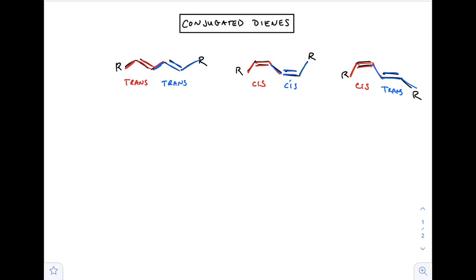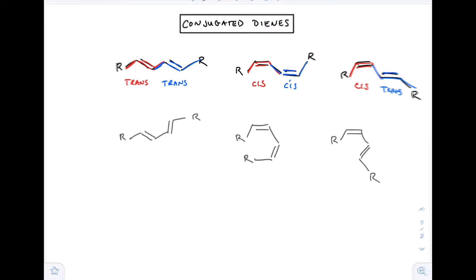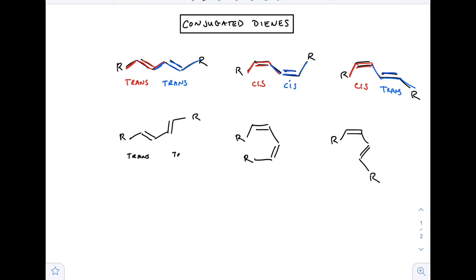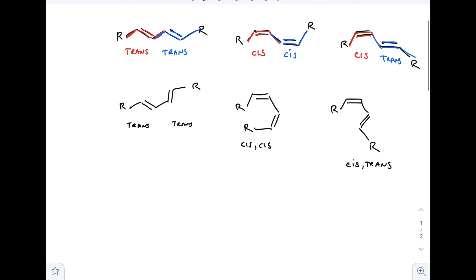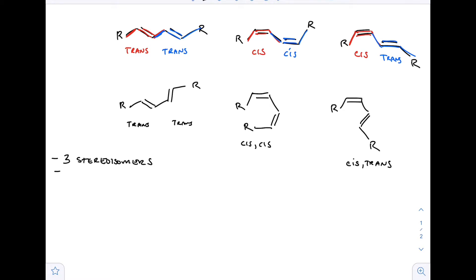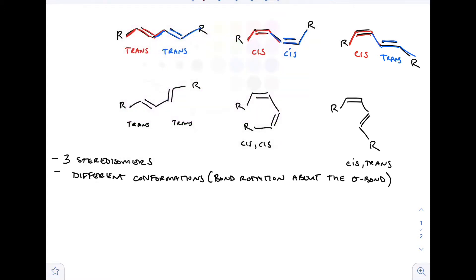This would be considered a 1,3-diene. Now let's take a look at these compounds redrawn a little differently. Looking at the bonds we have trans-trans, cis-cis, and cis-trans orientations - these are all identical to the compounds above. These are pretty much just three stereoisomers drawn with three different conformations. Each of them has a single conformation drawn below, and that's something we should be able to identify: whether something is a stereoisomer or just a different conformation - an identical compound.